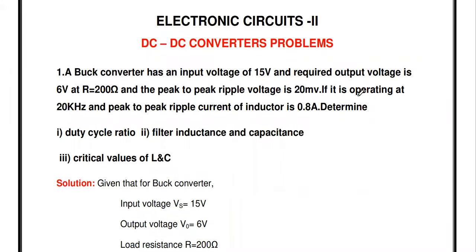Welcome to my channel. Today we are going to discuss the Unit 5 problems from the subject Electronic Circuits 2. Unit 5 covers power amplifiers and DC to DC converters. In this video we are going to discuss DC to DC converter problems.